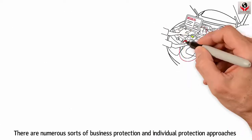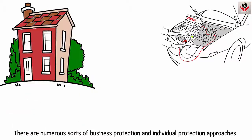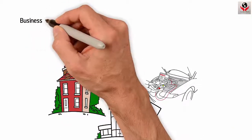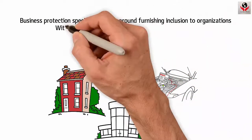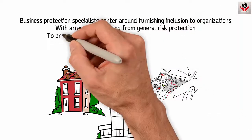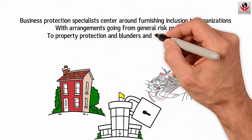This includes insurance for motor vehicles, home insurance, and life insurance. Business insurance agents focus on providing coverage to businesses with policies ranging from general liability insurance to property insurance and errors and omissions coverage.